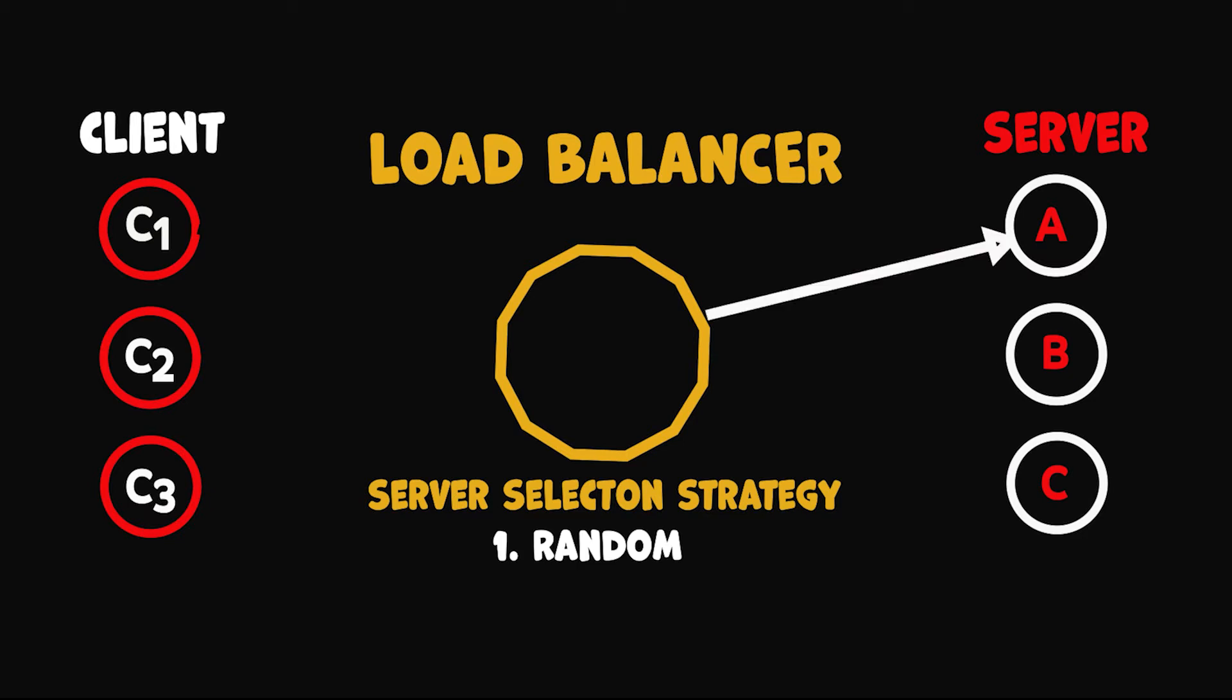One way of server selection could be randomly selecting the servers. Another approach could be round robin, wherein the load balancer goes through each server in a specific order, maybe starting from top server A, then going to B and then C, and then going back to A like a loop.